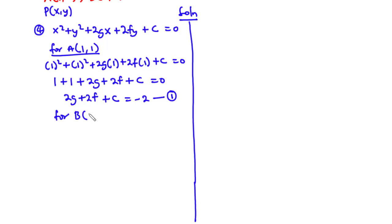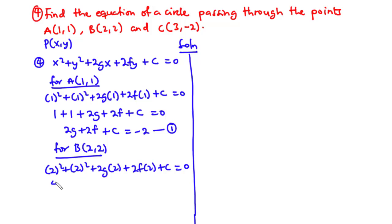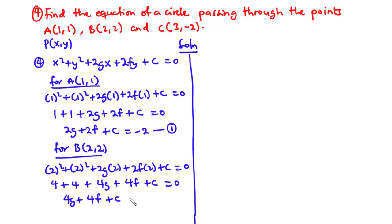For point B(2,2): 2 squared plus 2 squared plus 2g times 2 plus 2f times 2 plus C equals 0. Simplifying: 4 plus 4 plus 4g plus 4f plus C equals 0. Since 4 plus 4 is 8, transposing gives us 4g plus 4f plus C equals negative 8. Call this Equation 2.